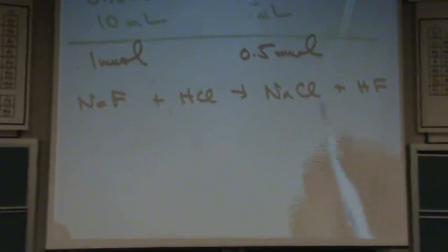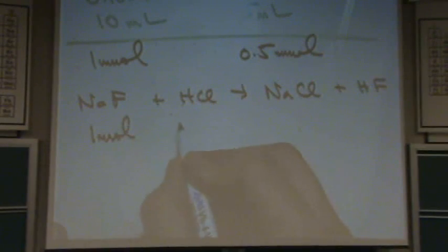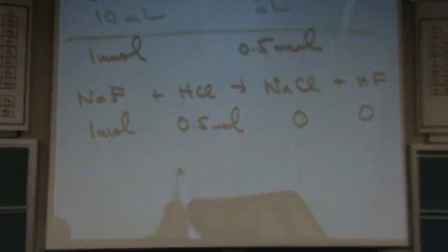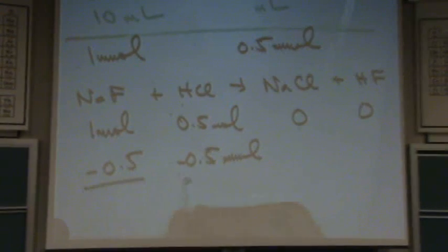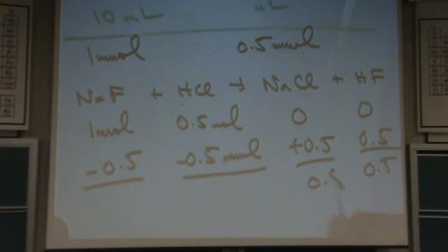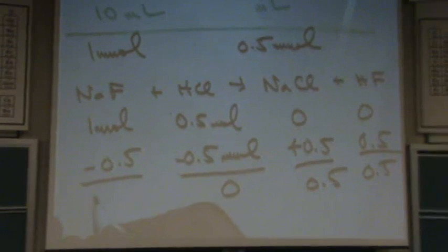So there's the reaction. And NaF, that's 1 millimole. HCl, 0.5 millimoles. And we start off with zeros of each of these. Subtract off the 0.5, and add 0.5 here. And you'll see you got 0.5, 0.5, 0, and 0.5.